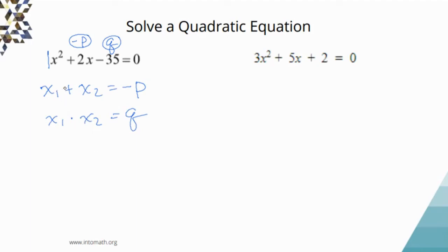And this is our q and it has to multiply to q. So something that adds to -2. So x₁ + x₂ has to equal -2, and x₁ · x₂ has to equal -35. Which two numbers will multiply to -35 and add to -2? x₁ is then equal to -7. x₂ is equal to +5. So we have -7 + 5 is -2. -7 times 5 is -35. These are the solutions to this equation.